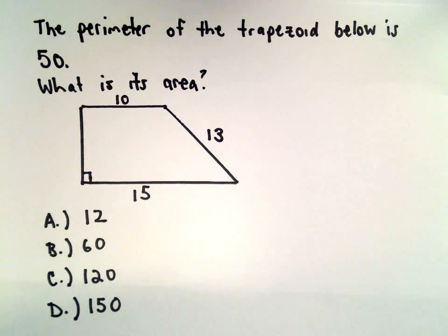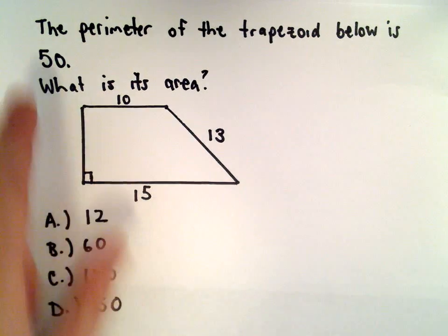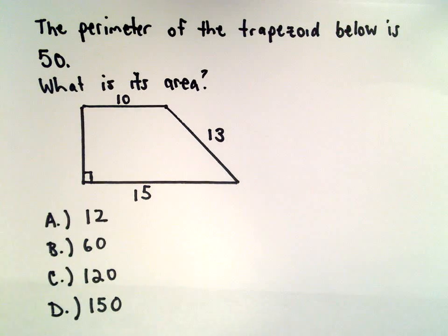Okay, in this problem, we're given that the perimeter of the trapezoid below is 50 units. We want to know the area of the trapezoid.